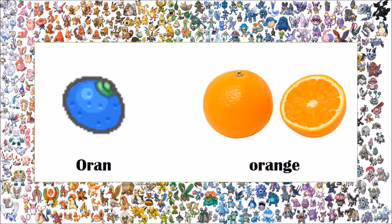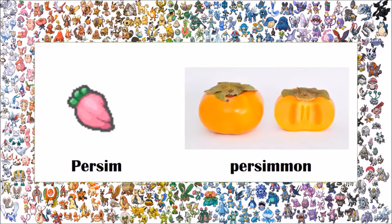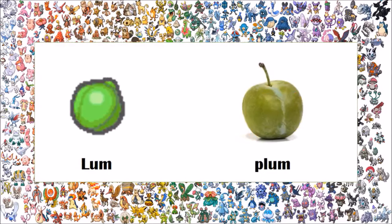The Oran berry is based on the orange. Ever since I was a little kid, I thought that its design was based on the blueberry, which it probably is, but its name implies that it's based on the orange, and it even looks like an orange except for its color. The Persim berry is based on the persimmon. While it may not look like one, and while the Persim is one of those berries whose design differs based on which game's sprite you're looking at, the name is obviously pointing to the persimmon. The Lum berry is based on the plum — something that was new to me, as I used to think it was based on the mulberry. I even found out there are variants of plums which are green.